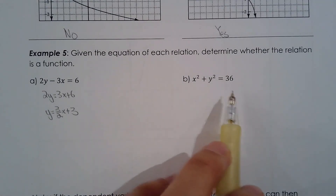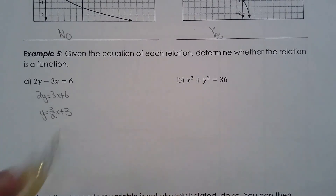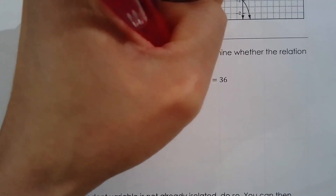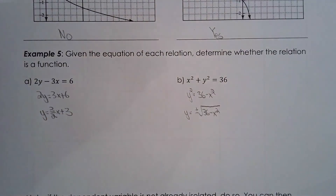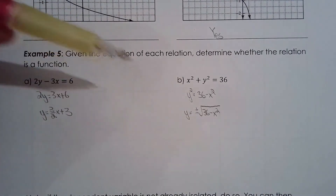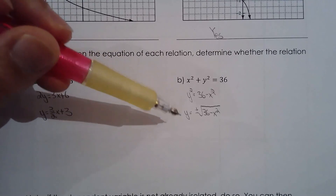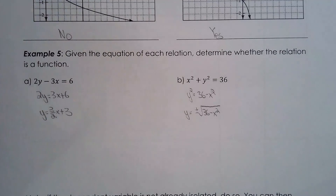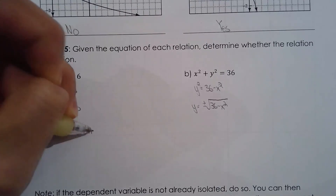What about x squared plus y squared equals 36? Let's isolate for the dependent variable. If you substitute a value of x — say zero — you get plus or minus six for y. Because you can get two potential values for y from one value of x, this is not a function. By the way, this is a circle centered at the origin with radius six, since x squared plus y squared equals six squared.